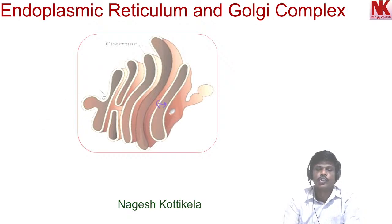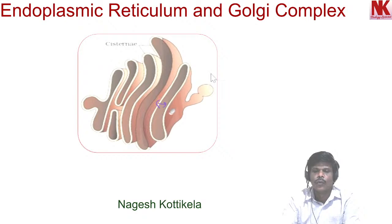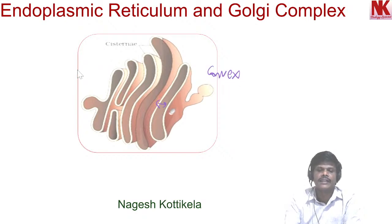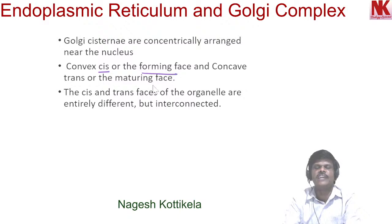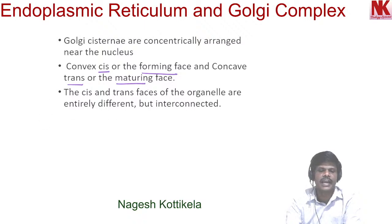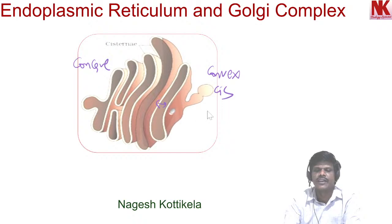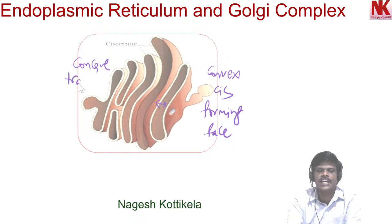In the Golgi apparatus structure, you will find two surfaces: one is called convex and the other is called concave. The convex surface is also called the cis or forming phase, and the concave surface is also called the trans or maturing phase. In the picture, you can see this convex is the cis or forming phase, and this one is the trans or maturing phase.